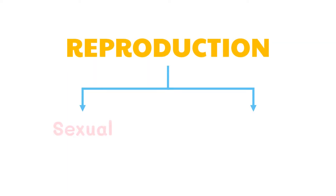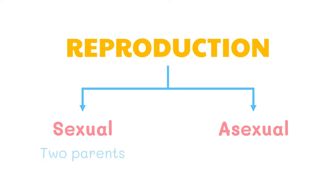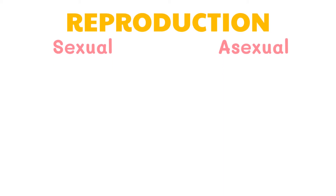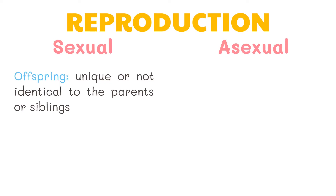Organisms reproduce either sexually or asexually. The main difference between sexual and asexual reproduction is the number of parents. Sexual reproduction means combining genetic material from two parents, while asexual reproduction produces offspring genetically identical to one parent only. Sexual reproduction occurs when a new individual is formed by the union of two sex cells, or gametes.